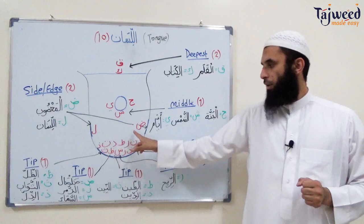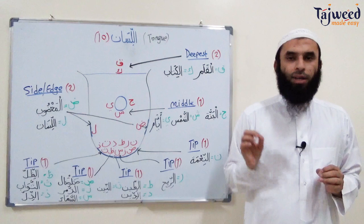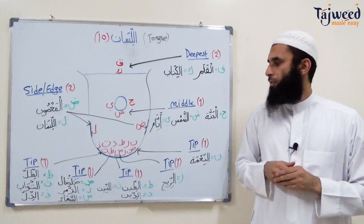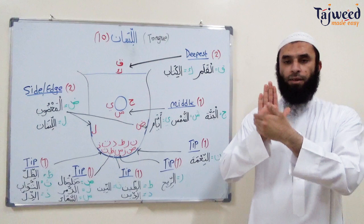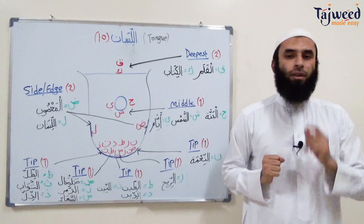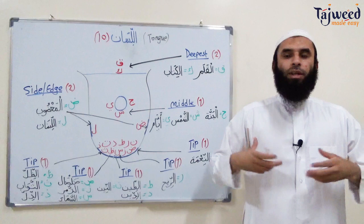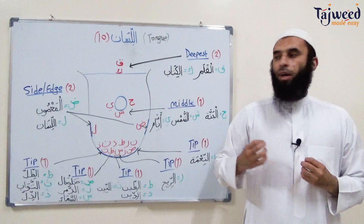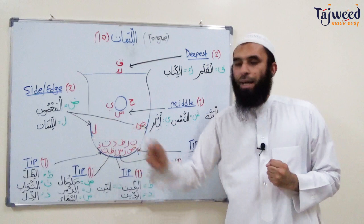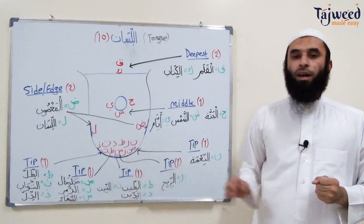On the side of the tongue, there are two letters each with their own makhraj point: Dhaad and Lam. Arabic is the only language that has Dhaad — the only language that pronounces it. The makhraj point for Dhaad is one of the sides of the tongue, either right or left, or both simultaneously, lying opposite the molars — upper right and upper left. Dhaad is a heavy letter pronounced with a lot of air, as in al-maghdubi, al-dhalin. Lam is also pronounced on the edge of the tongue, as in al-lisan.